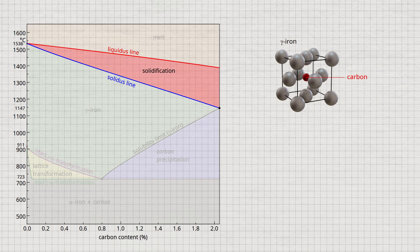The good solubility of carbon is due to the face-centered cubic lattice structure of gamma-iron. The relatively small carbon atoms find space in the centers of the face-centered cubic unit cells. These free sites are also called octahedral sites.